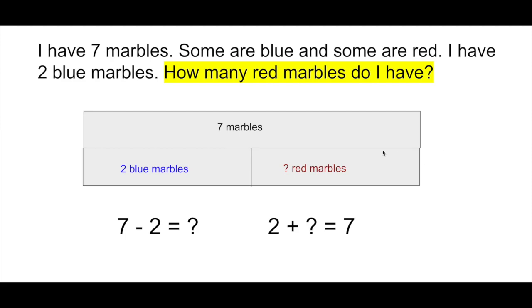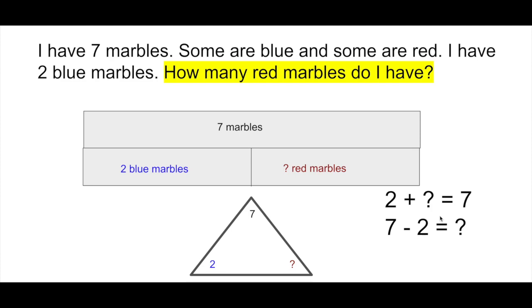Either they imagine it like seven marbles and take away the two blue ones. That would give you the number of red ones left over. Or they picture it like two blue marbles plus some red marbles is seven altogether using adding.